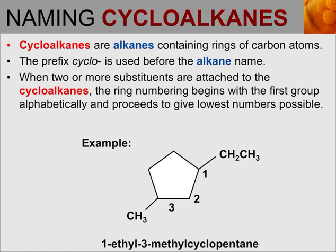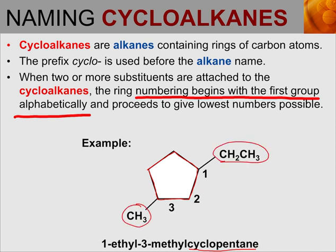What if we have two or more groups attached to our ring? If you do have multiple groups attached to the ring, we're going to number the ring beginning with the first group alphabetically, and then make sure that each group has the lowest number possible. So when naming a compound like the one below, we have five carbons in the ring — that would be cyclopentane. We have two groups attached: the one on top has two carbons, so that would be called ethyl, and the one below has one carbon, so that would be called methyl.